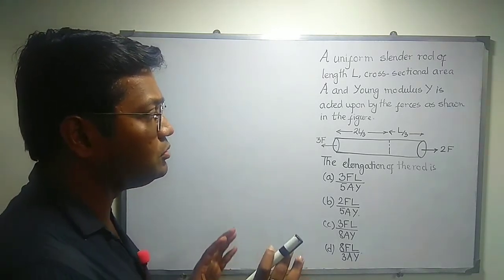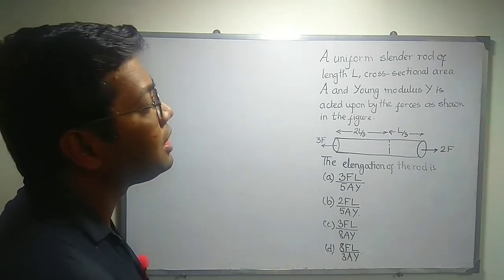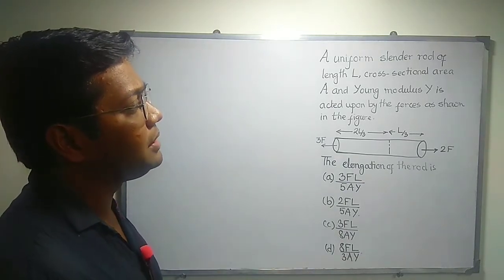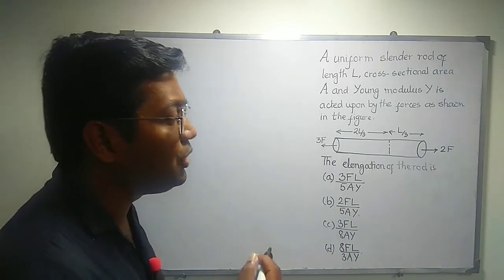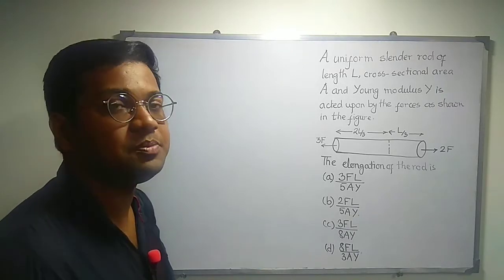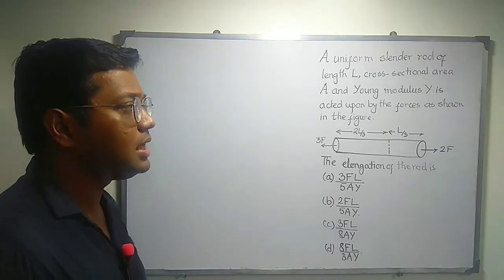But here it is used for what purpose? Slender rod of length capital L, cross sectional area capital A, and Young modulus Y. Obviously it is a property of the material. And it is acted upon by the forces as shown in the figure.